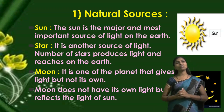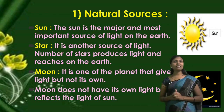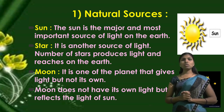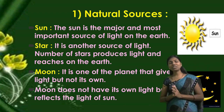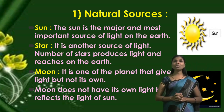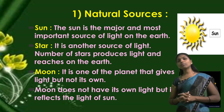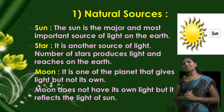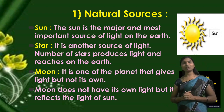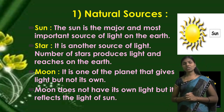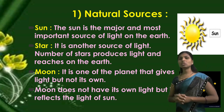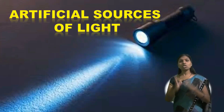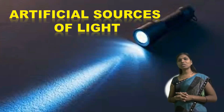The Sun is the most important natural source of light. The second example is stars — stars produce light that reaches the Earth. Third, we have the Moon. The Moon does not have its own light; it reflects the light of the Sun. Additionally, some living things like glowworms and jellyfish are also examples of natural sources of light.